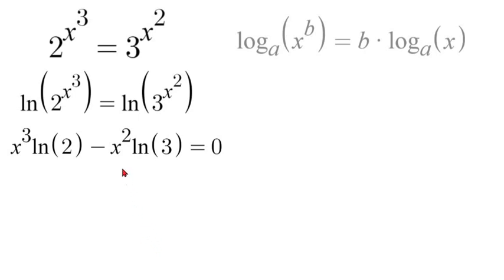Now if you notice, x squared is common on both sides of these, so we can factor out an x squared. So we have x squared times natural log of 2 times x minus natural log of 3 is still equal to 0.